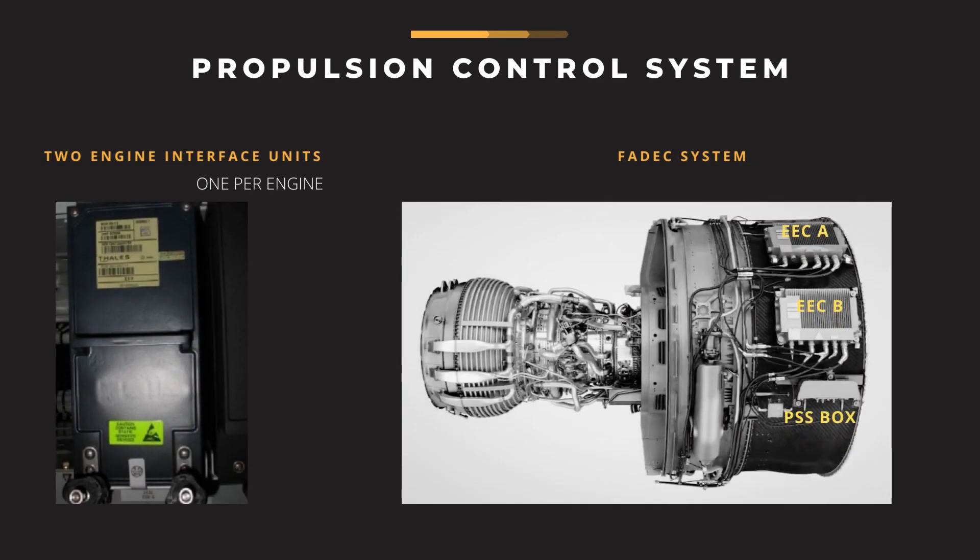The Propulsion Control System consists of the Engine Interface Unit and FADEC system, which includes two electronic engine control units and a pressure subsystem box. Each EIU is dedicated to an engine. EIU 1 and 2 are located in the Aircraft Avionics Bay. The two EEC units and PSS are soft-mounted using vibration isolators on brackets attached to the engine right-hand fan case. The EECs are located at the 1 and 2 o'clock positions, and the PSS is located below the EECs at the 4 o'clock position.